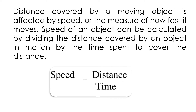Distance covered by a moving object is affected by speed, or the measure of how fast it moves. Speed of an object can be calculated by dividing the distance covered by an object in motion by the time spent to cover the distance. So the formula of speed is: speed is equal to distance covered divided by time.